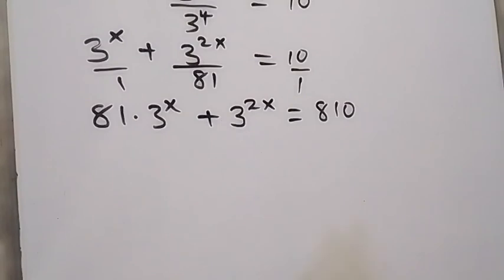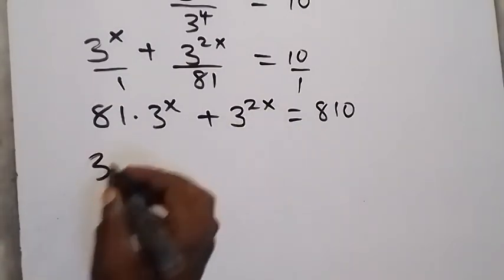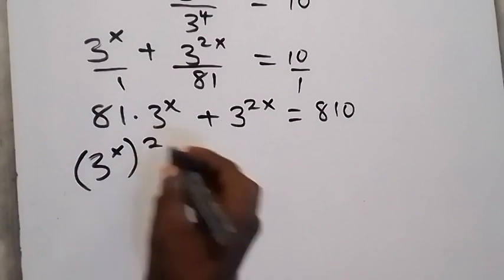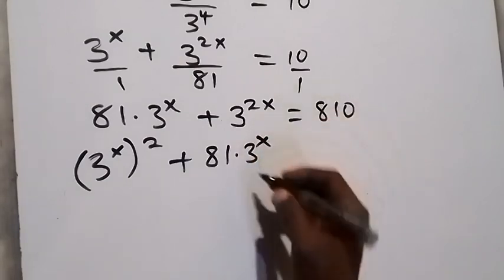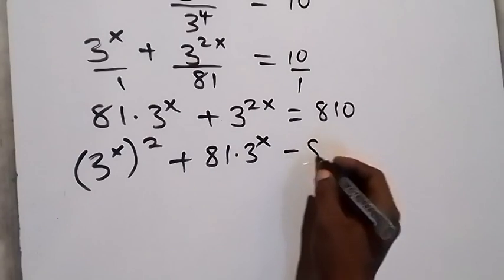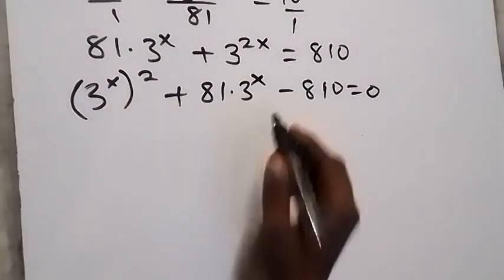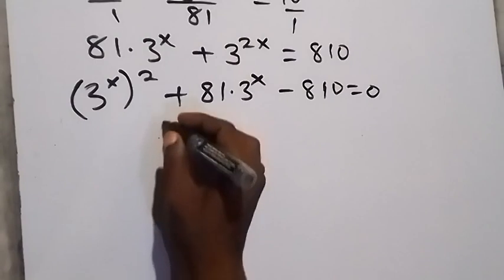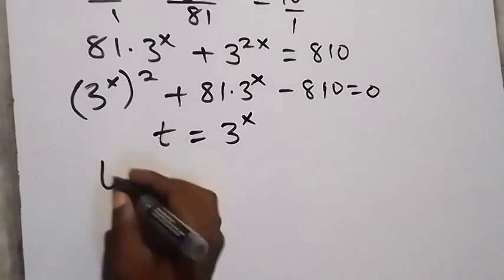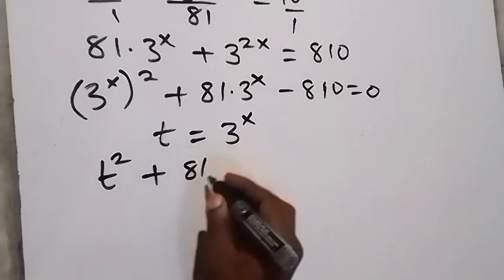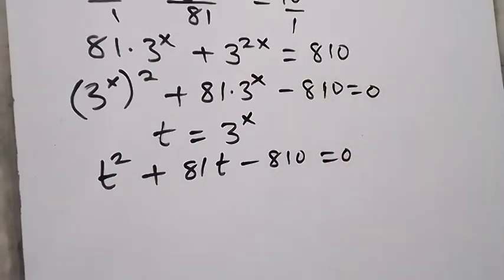Solving further, we rearrange to form a quadratic equation: 3 raised to power 2x plus 81 times 3 raised to power x minus 810 equals 0. We use a substitution — let t equal 3 raised to power x. The equation becomes t squared plus 81t minus 810 equals 0.